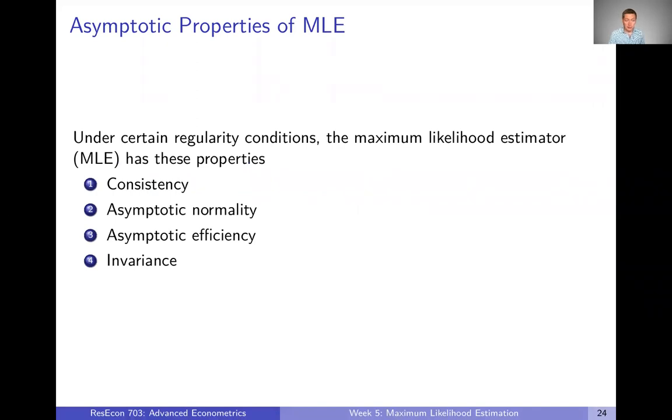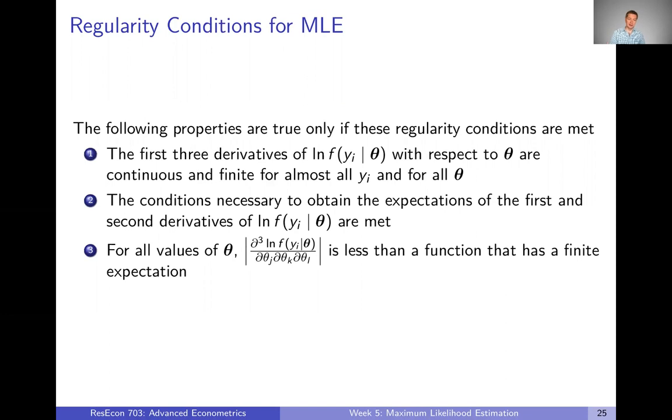Just to quickly summarize, and then we'll go into more detail, under certain regularity conditions, the maximum likelihood estimator has the properties of consistency, asymptotic normality, asymptotic efficiency, and invariance. We're going to talk about each one of those in this video. But first, let's talk about these regularity conditions.